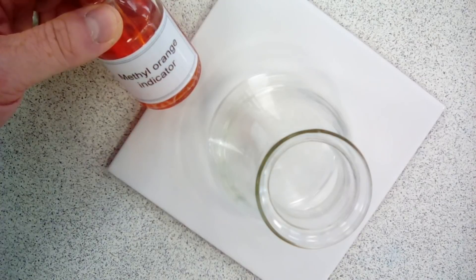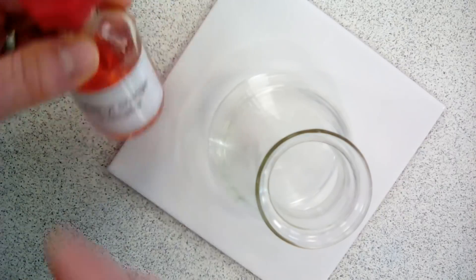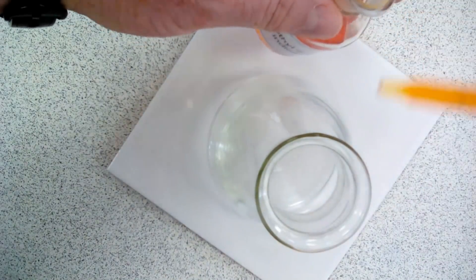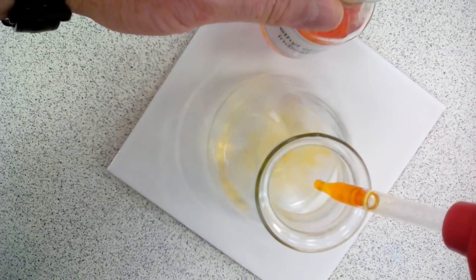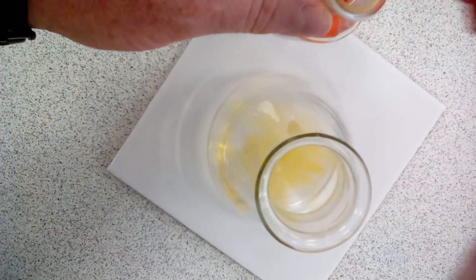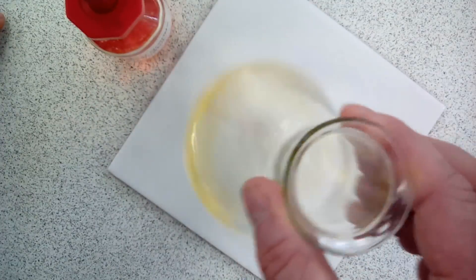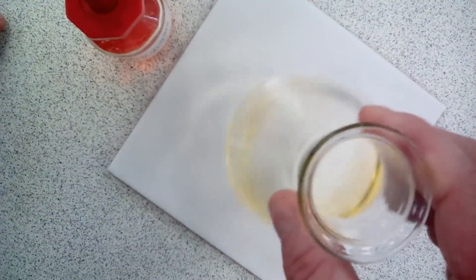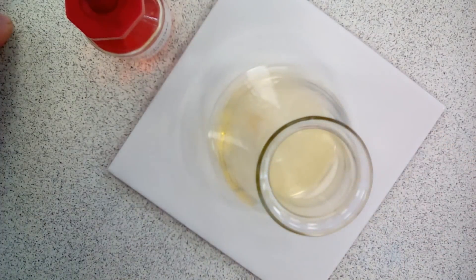We then put five to ten drops of methyl orange indicator into the 0.1 molar sodium hydroxide solution, and then we need to swirl the beaker to get the methyl orange to spread throughout the sodium hydroxide.